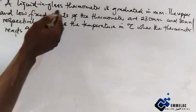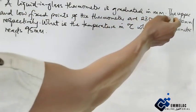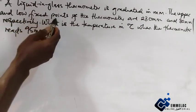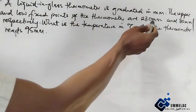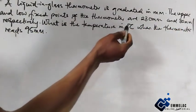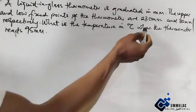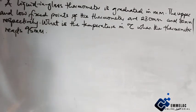A liquid-in-glass thermometer is graduated in millimeters. The upper and lower fixed points of the thermometer are 230 millimeters and 80 millimeters respectively. What is the temperature in degrees centigrade when the thermometer reads 95 millimeters?